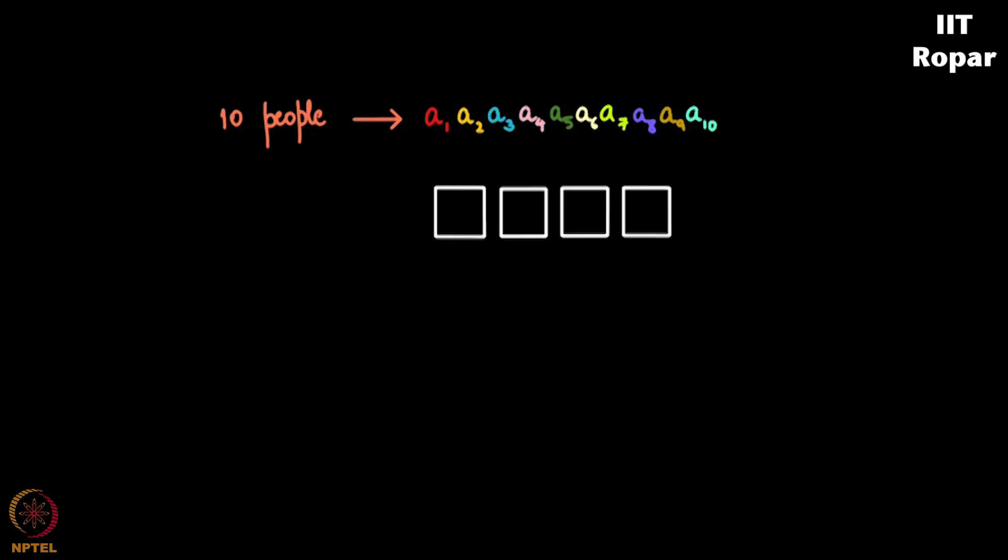And the first slot can have any of these 10 numbers, and once you put a fellow here from these 10 people, you are left with 9 choices for the next one. And once you put someone here, another one here, you are left with 8 choices for this one. And as you can see 10 here, 1 less means 9 here, 1 less means 8 here, and 1 less here means 7.